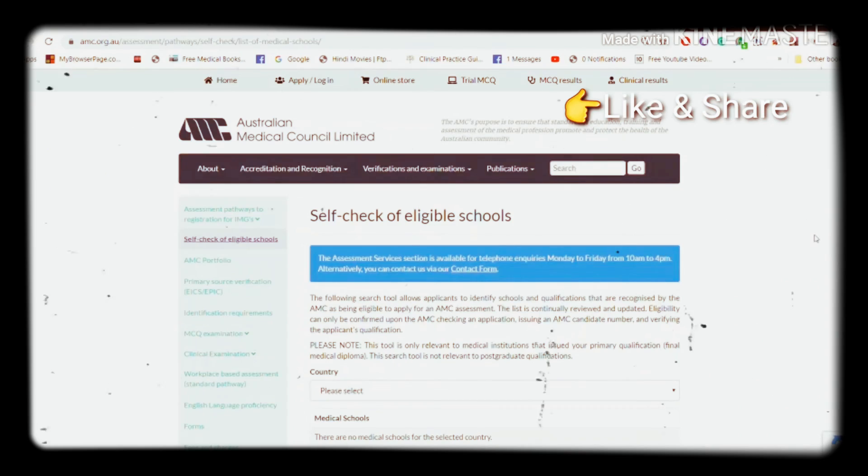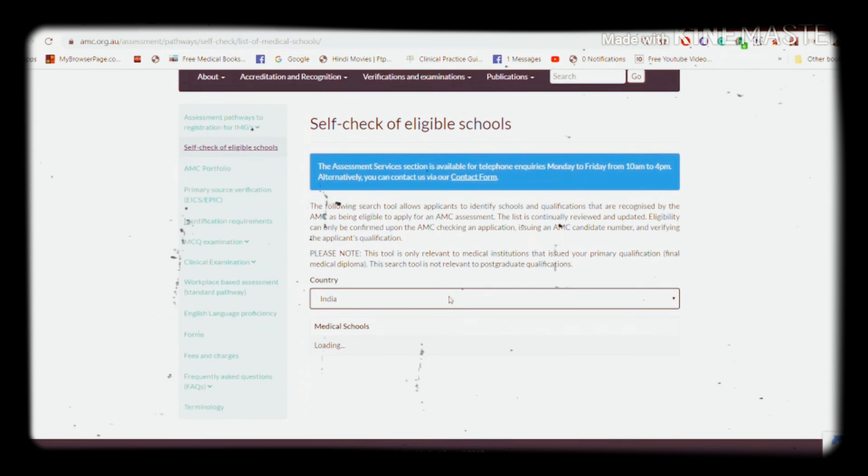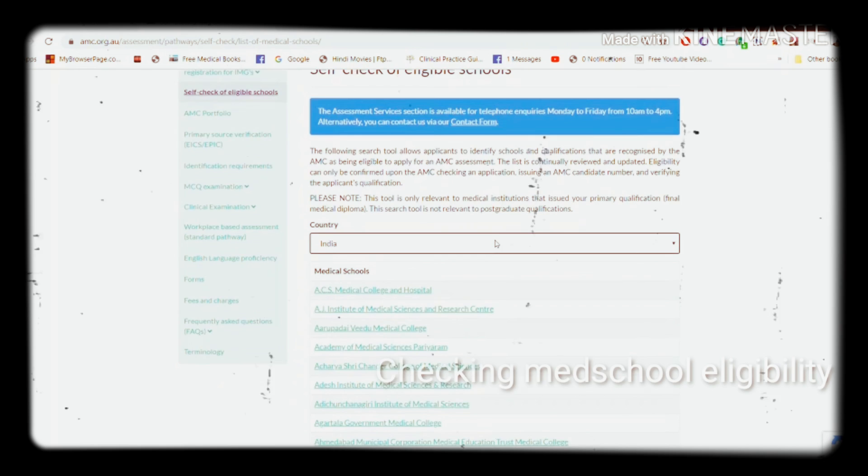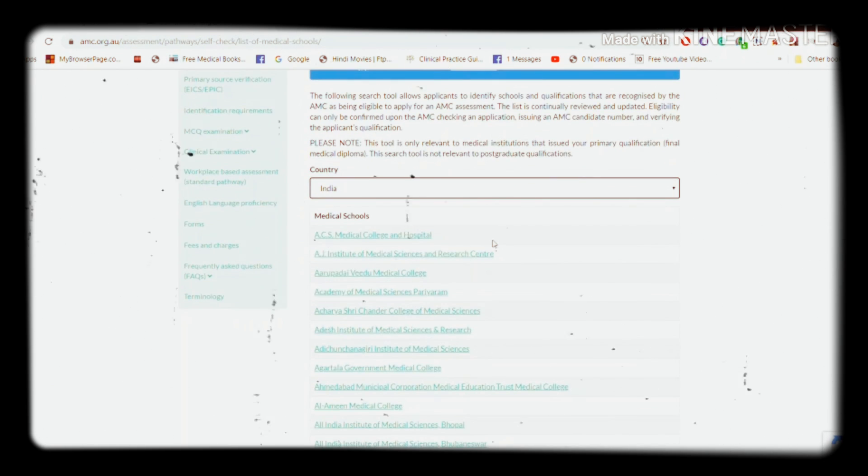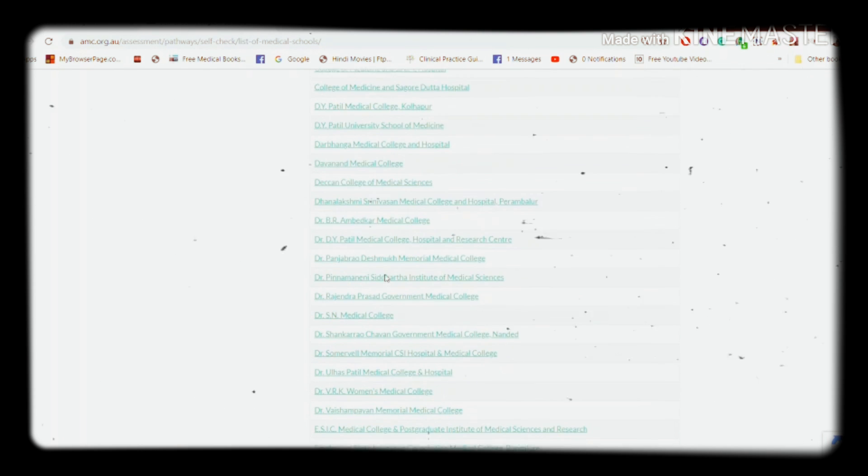This is Dr. Sharir. Okay guys, so as you can see, this is how it looks like in the screen. All you have to do is go there and select any country. Say I'm typing India. So India, and they are going to show me a lot of medical colleges because there's so many number of medical colleges. Now you can find out your own medical college.